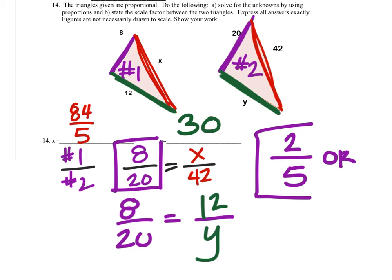This scale factor would take you from the big triangle to the small one. But if you wanted to multiply the small one to get the big one, you'd just reciprocate that fraction. So 2 fifths or 5 halves will work for the scale factor.